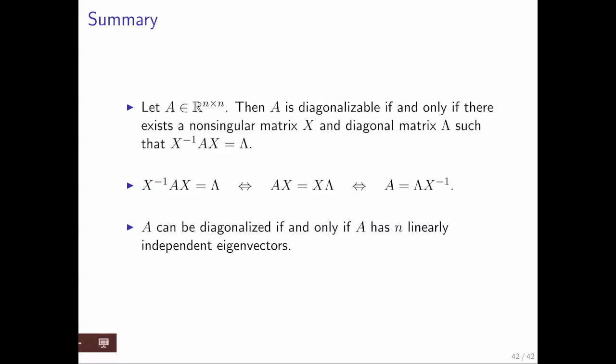And then A can be diagonalized if and only if A has n linearly independent eigenvectors. So diagonalizing a matrix is another way of stating the algebraic eigenvalue problem. That's the important thing to take away from this unit.